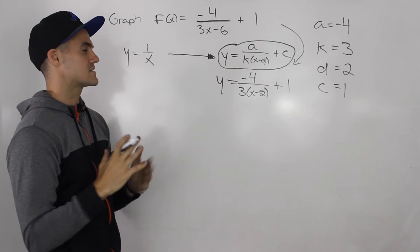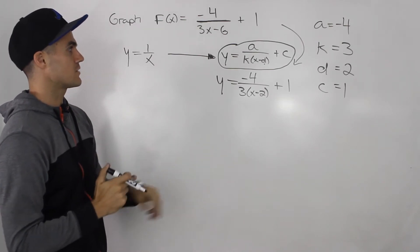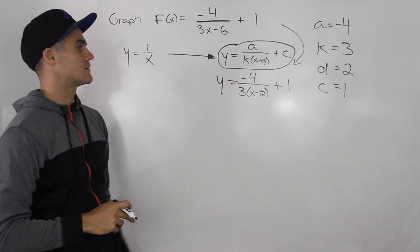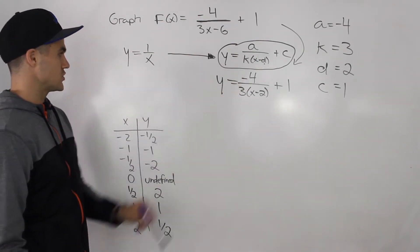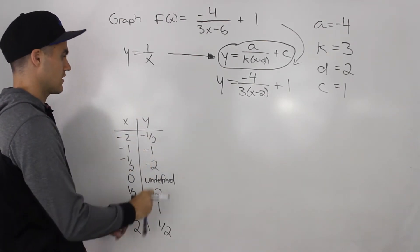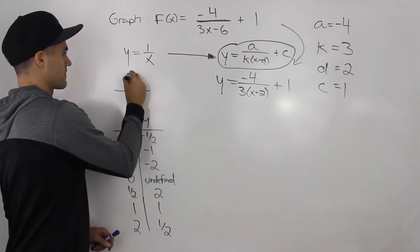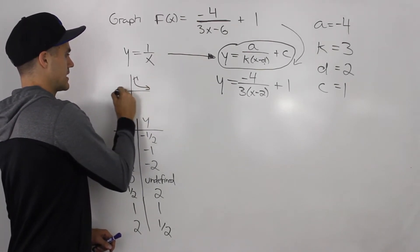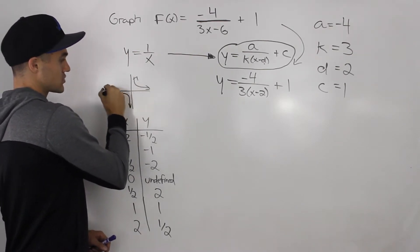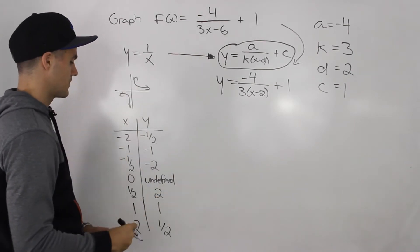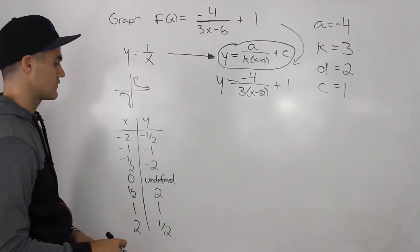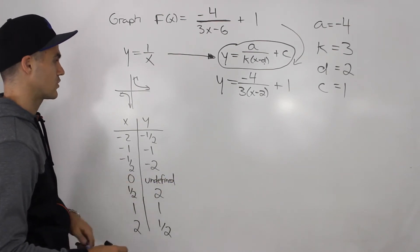Now that we have the transformation values, we take the table for 1/x. If you remember, this function has a vertical asymptote at x = 0 and a horizontal asymptote at y = 0. That's why at an x value of 0 the y values are undefined — that represents the vertical asymptote.